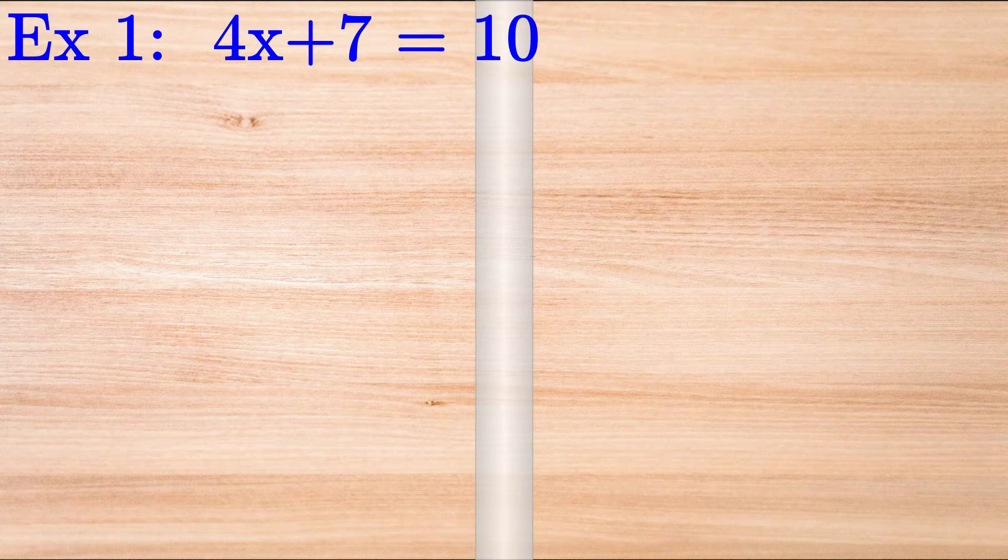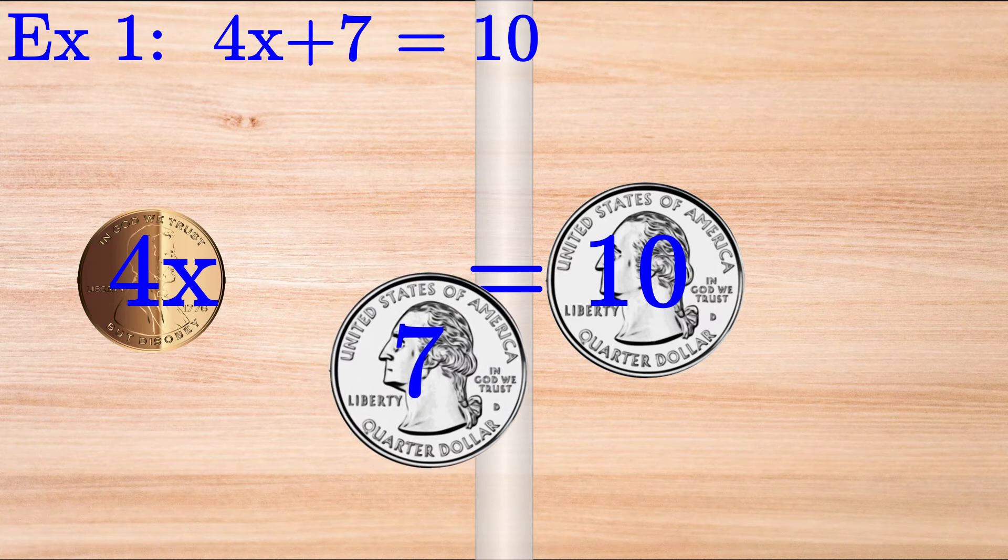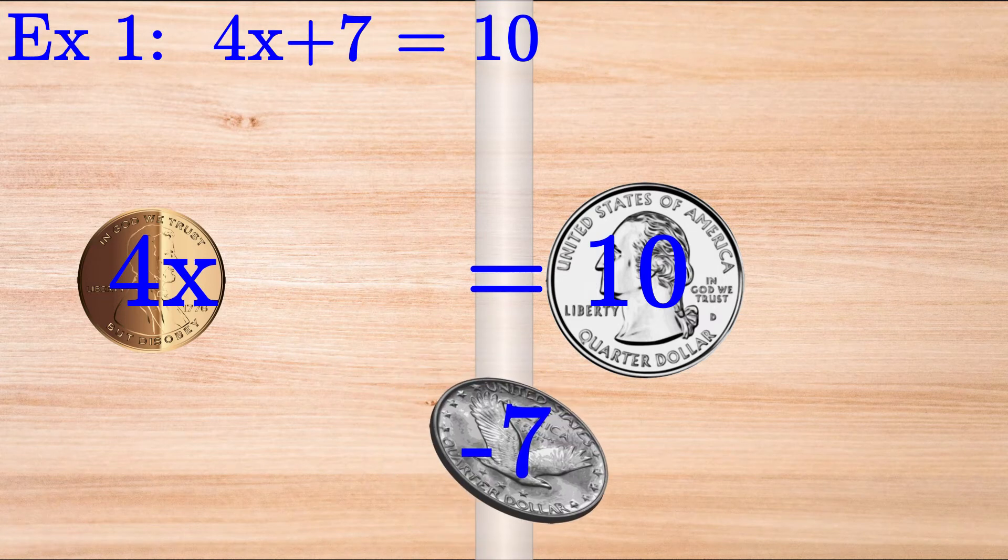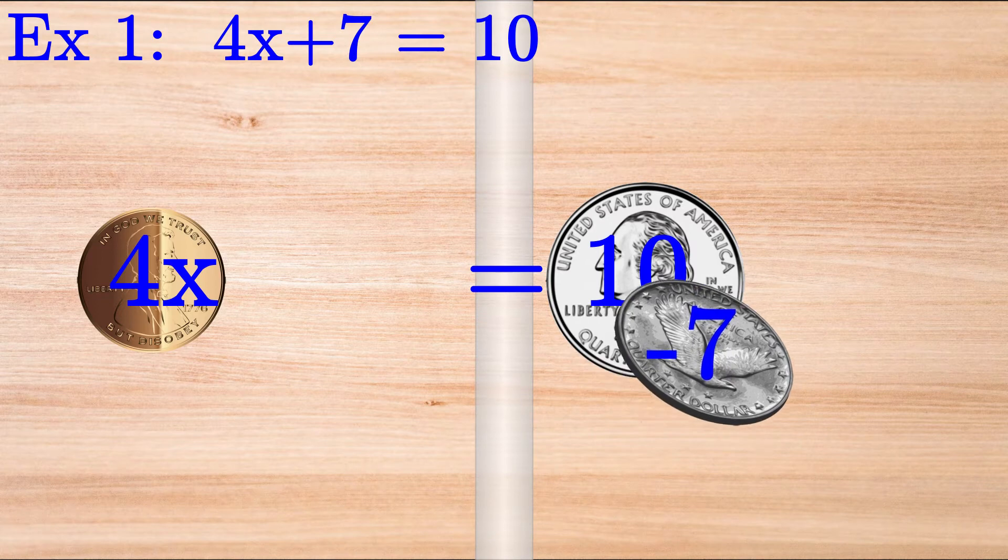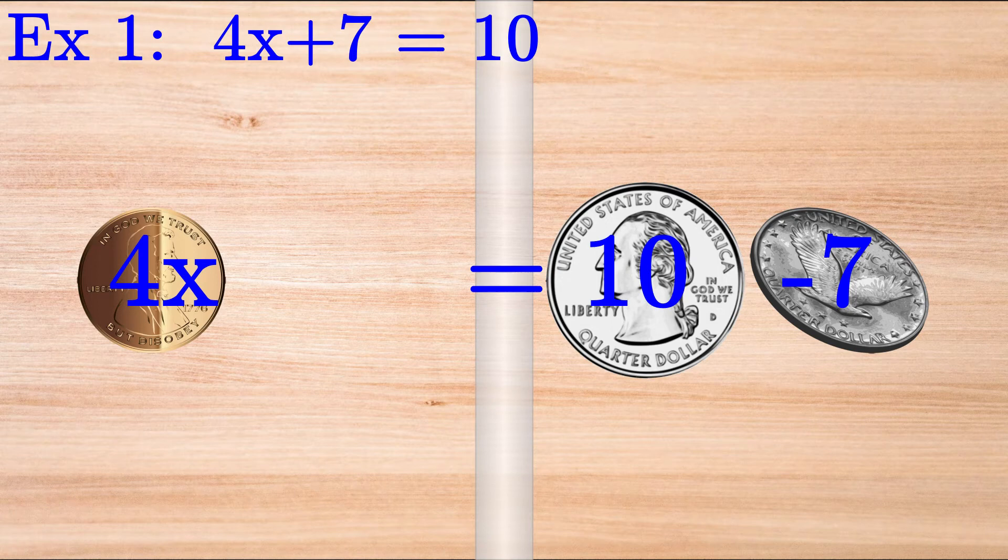Solve for X if 4X plus 7 equals 10. We want the 4X coin by itself. So we slide the 7 coin from the left-hand side of our desk to the right-hand side. When the coin flips, it becomes negative 7. Now we're almost done.